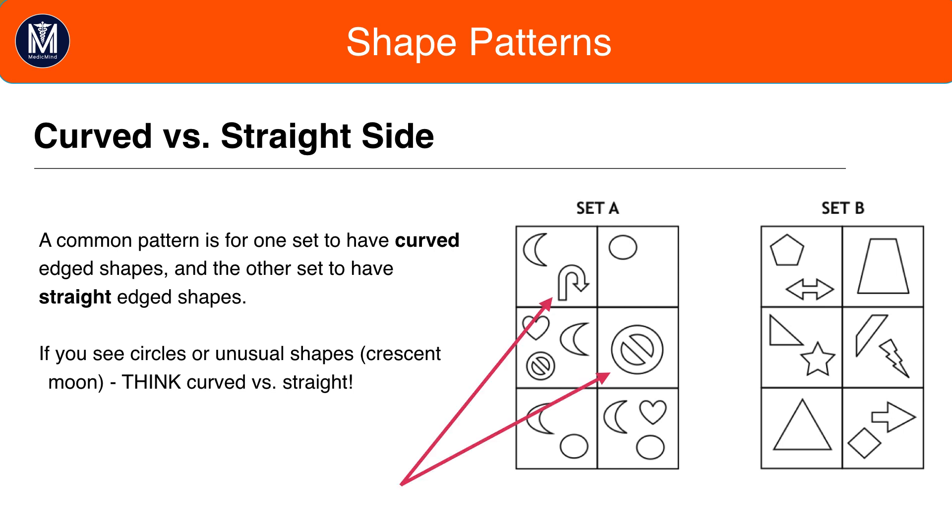Also, bear in mind that the curved shapes might have straight parts. The pattern, strictly speaking, is that set A has shapes with some curved elements and set B has shapes with just straight elements.